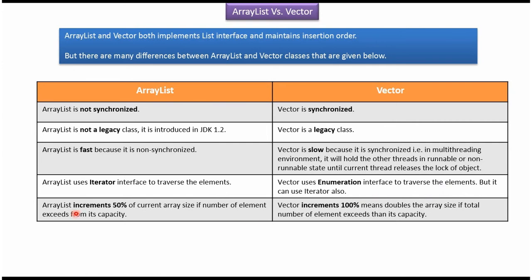ArrayList increments 50% of the current size if the number of elements exceeds its capacity. In the case of Vector, it doubles the array size if the total number of elements exceeds its capacity.